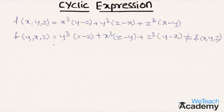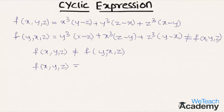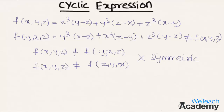Similarly, f of x, y, z is not symmetric in y and z, as f of x, y, z is not equal to f of y, x, z. It is also not symmetric in x and z, as f of x, y, z is not equal to f of z, y, x. So f of x, y, z is not symmetric in x and y, y and z, or z and x.